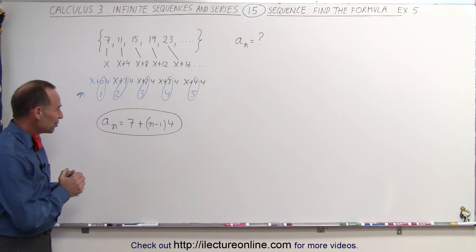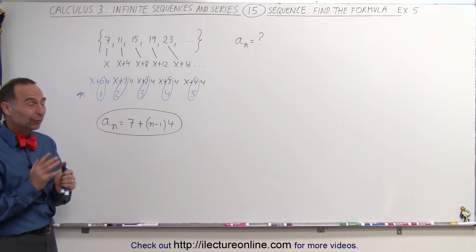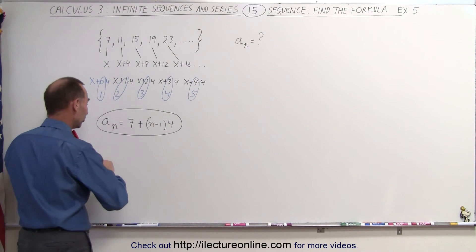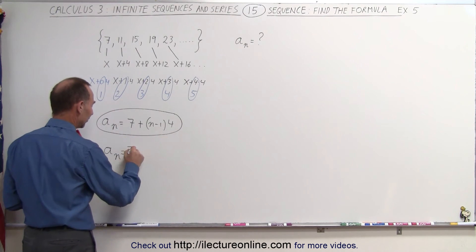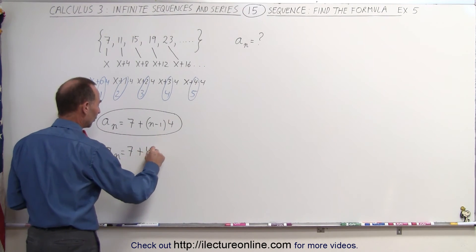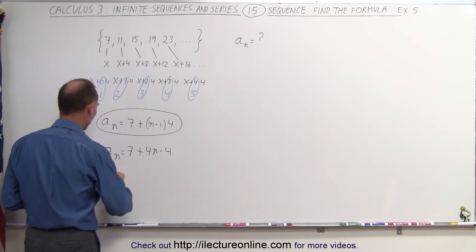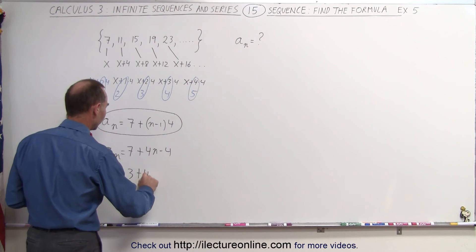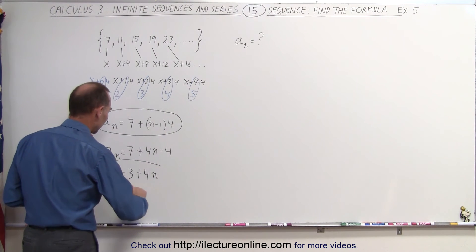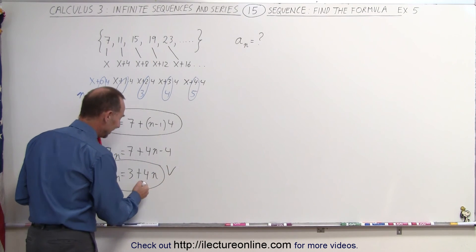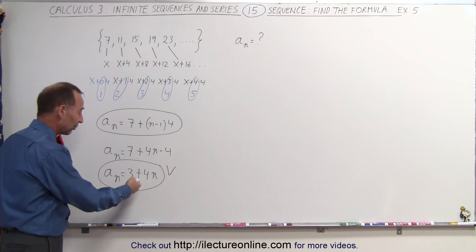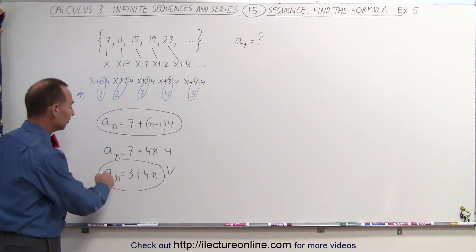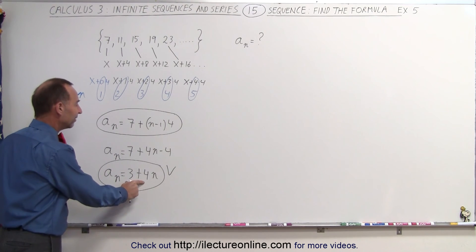Now, some of you may be tempted to do the following. Maybe you want to say, well, there's a different way we can rewrite this. We can simplify this by saying a sub n is equal to 7 plus 4n minus 4, or a sub n is equal to 3 plus 4 times n. Now, even though this is a correct form of the answer, this is absolutely correct. Every term can be expressed like that, or every number in the sequence can be expressed like this.